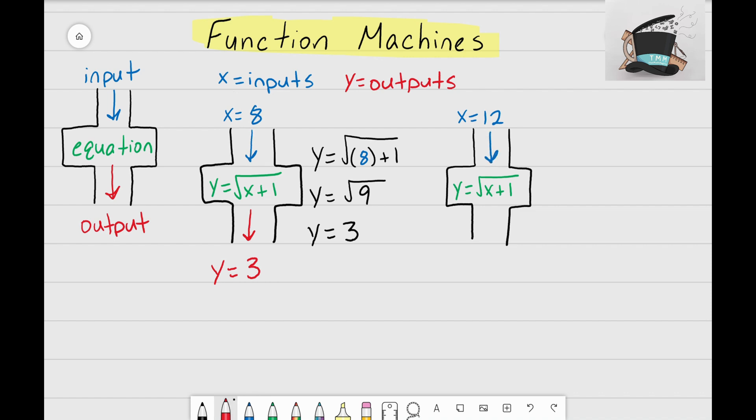So 12 is my input being dropped into the function machine. I want to see how the equation's going to change it and what the output will be. Let's go through the same steps again. I'm going to rewrite my equation y equals the square root of x plus 1, and instead of writing my x value, I know that my input for this problem is x equals 12.